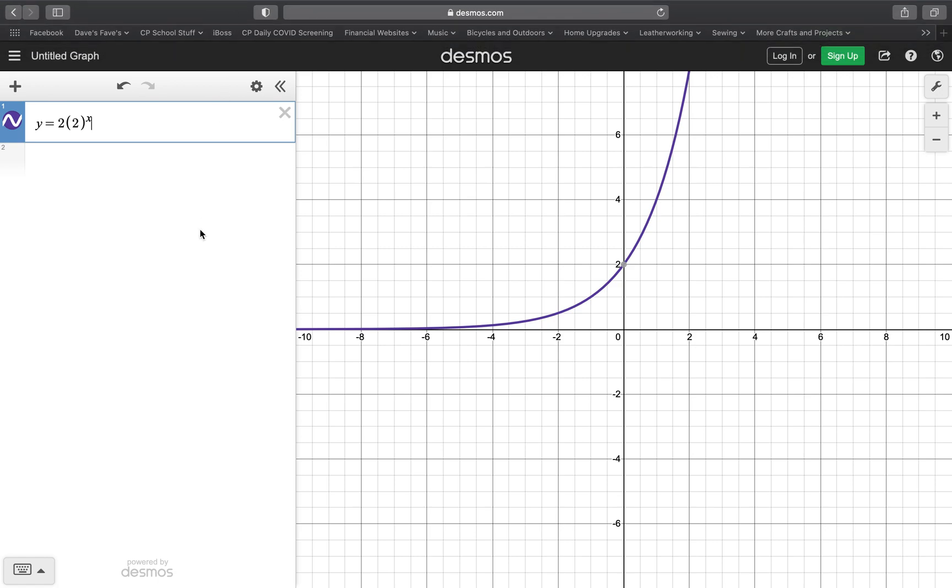Hey, Dave Stoblin here, and I would like to show you the effect of negatives on the exponential growth and decay equation, y equals ab to the x.